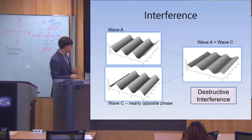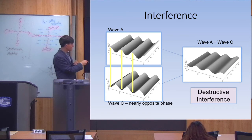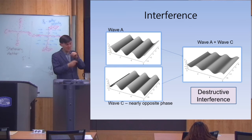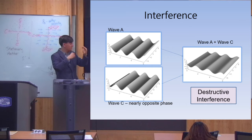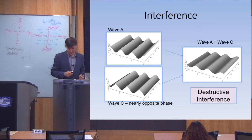On the other hand, if they were nearly opposite phase waves — when this one is up, this one is down, and vice versa — then what you get at the end is a very small wave. This is known as destructive interference. If the phase of the waves are opposite, then you end up with very little light being detected in the apparatus.